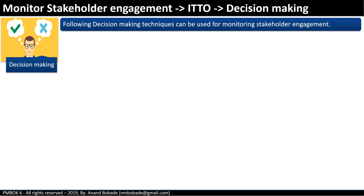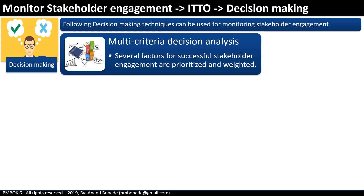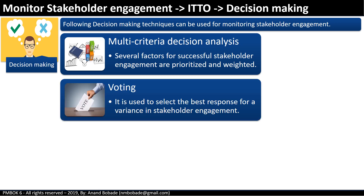Under decision making, once you have multiple options from the alternative analysis, you need to decide which option to choose. Multi-criteria decision analysis is a technique where several factors for successful stakeholder engagement are prioritized and weighted to identify the most appropriate choice. Another decision-making technique is voting, which is used to select the best response for a variance in stakeholder engagement.